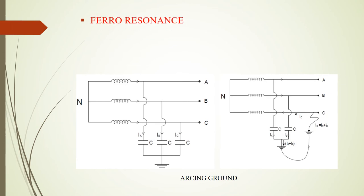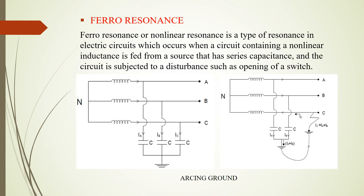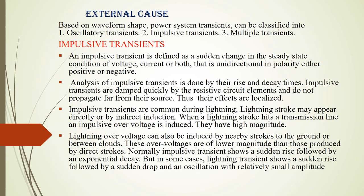Finally, we come to ferro resonance. In a linear resonance circuit, the L and C values are fixed and resonance depends on frequency. However, ferro resonance involves a non-linear inductor where the reactance not only depends on frequency but also on the magnetic flux in the core material. This gives rise to a resonance condition where the current becomes very high. Ferro resonance is a non-linear type of resonance in an electrical circuit which occurs when the circuit contains a non-linear inductance — similar to an RLC series circuit but with non-linear inductance.